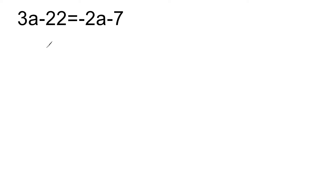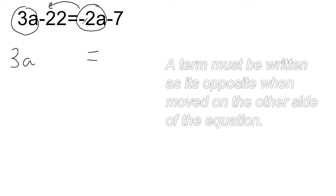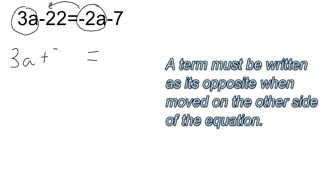So what we're going to do is get all of the terms with coefficients on one side and all of the terms with constants on the other side. We're going to rewrite this first term because it has a coefficient, putting all terms with coefficients on the left. We're going to take this negative 2a and move it across the equal sign, writing it as its opposite: plus 2a.